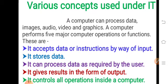The fifth operation: it controls all operations inside a computer. Basically the computer can control all operations inside the computer — we can store data, perform various calculations on that data, and process that data. All these internal operations are controlled within the computer system. So any computer system can perform all five operations: accept data as input, store that data, process that data, display it as output, and control all operations inside the computer.